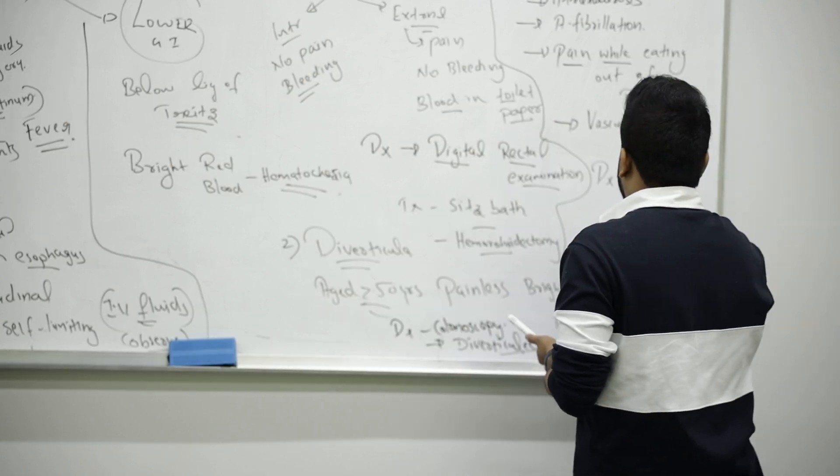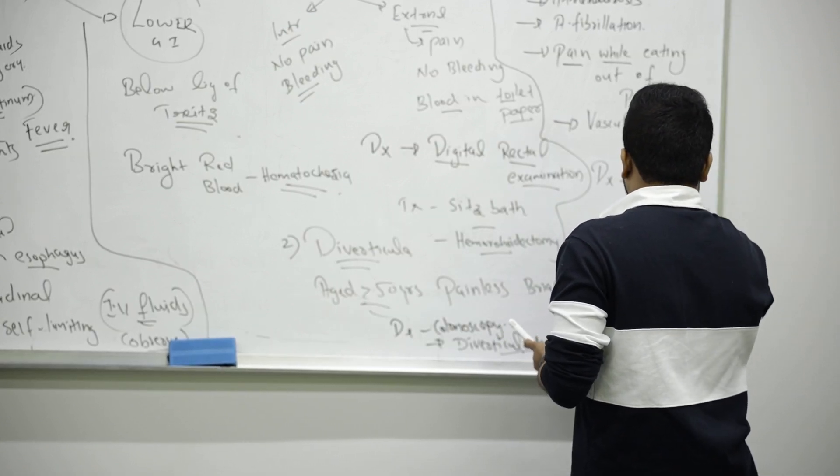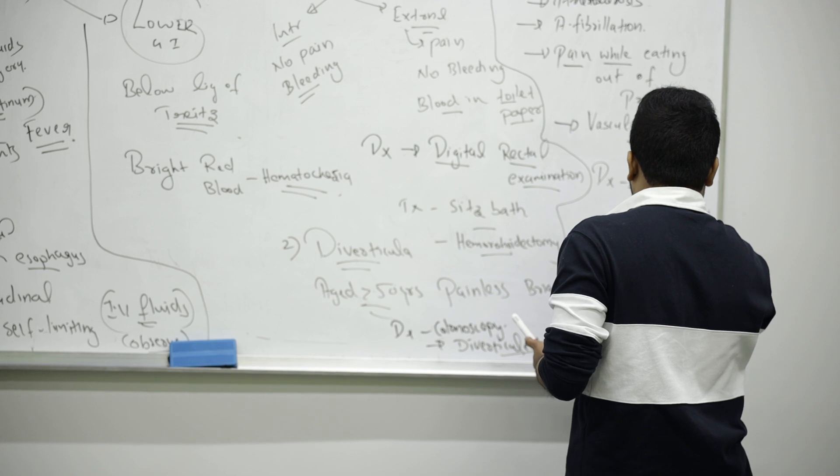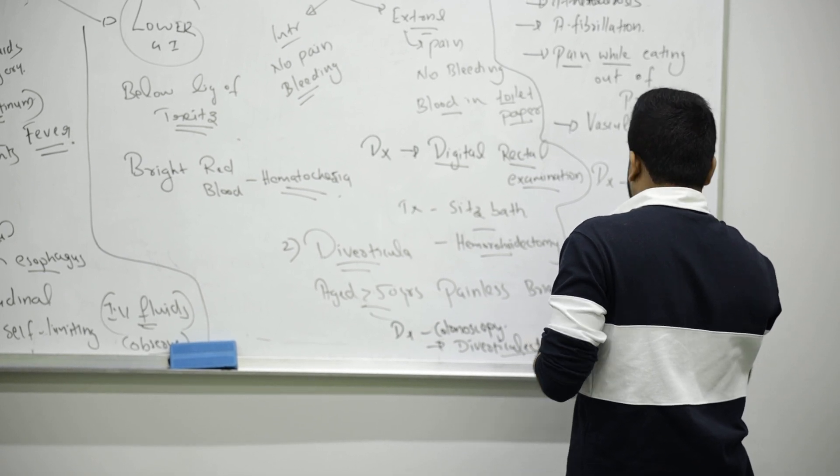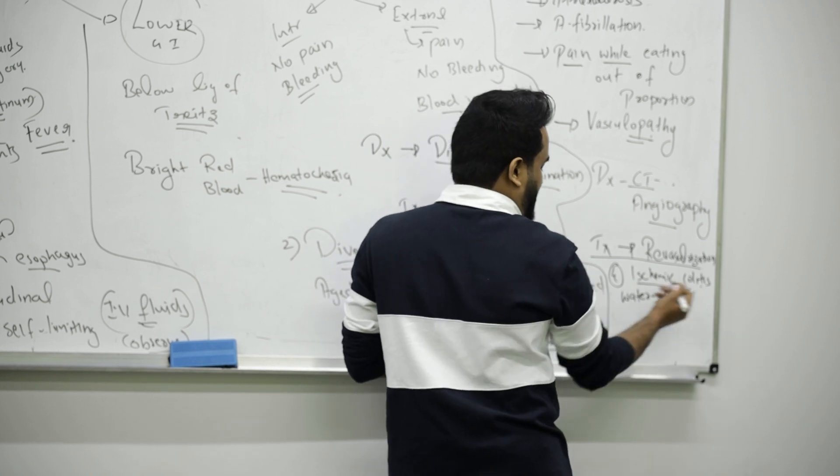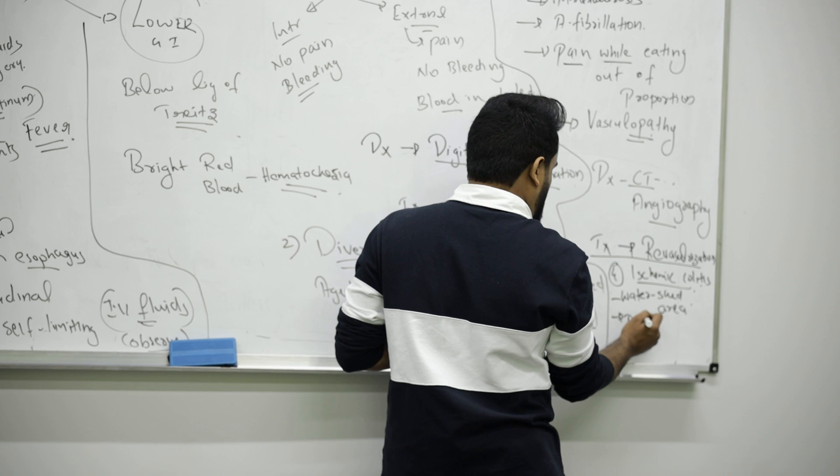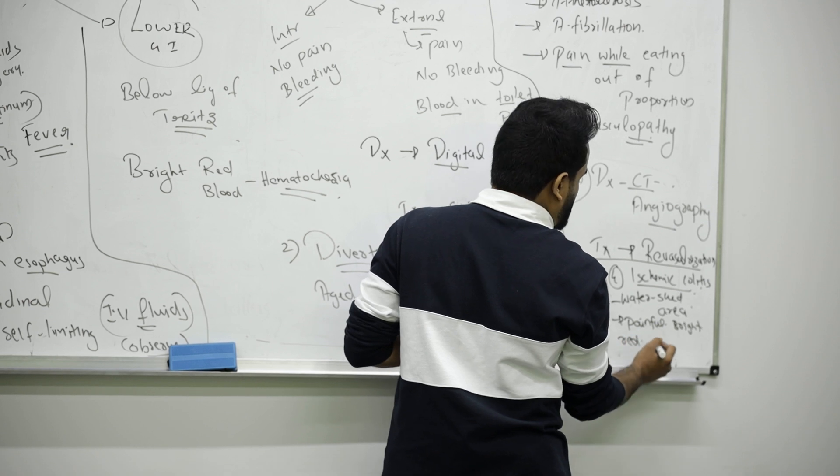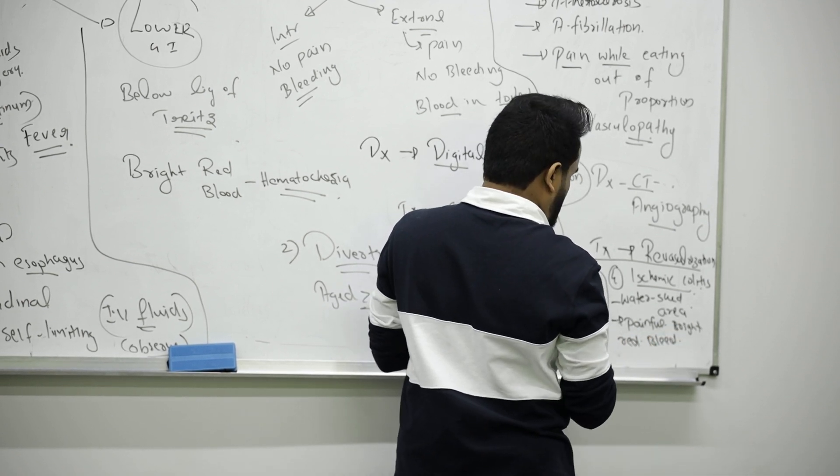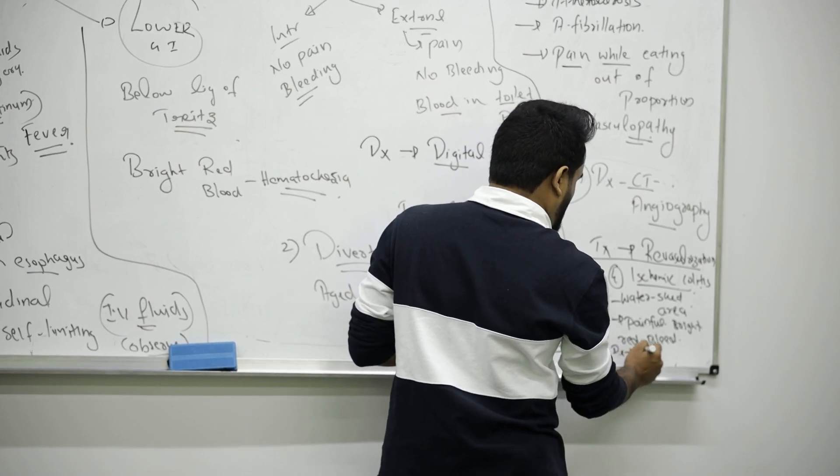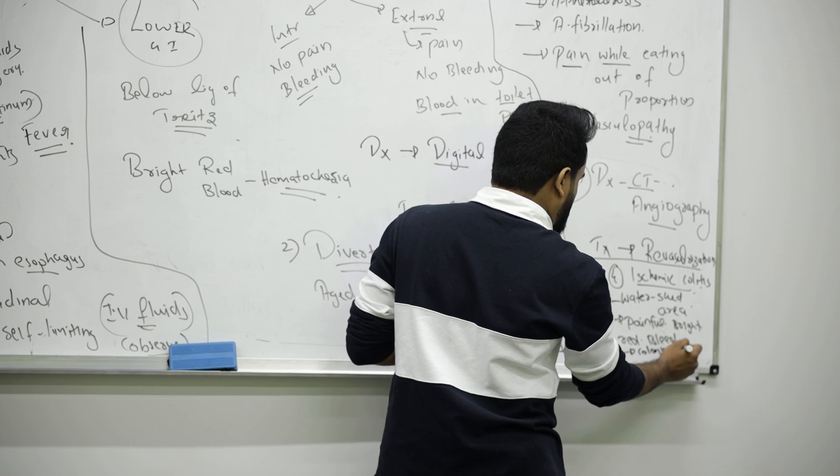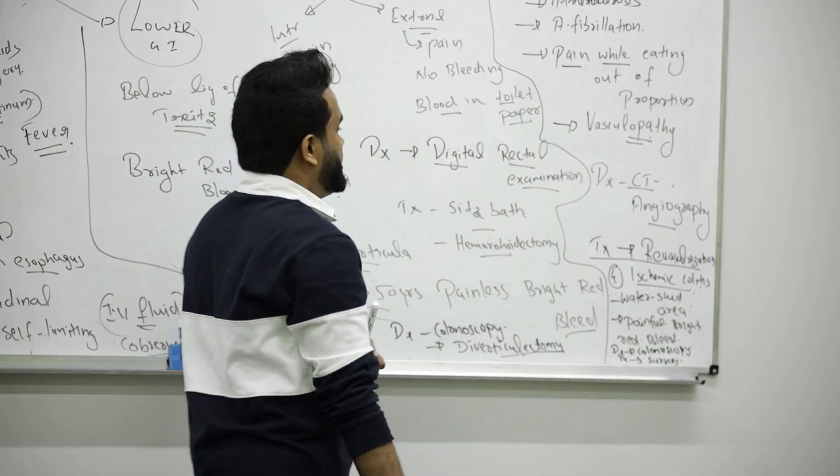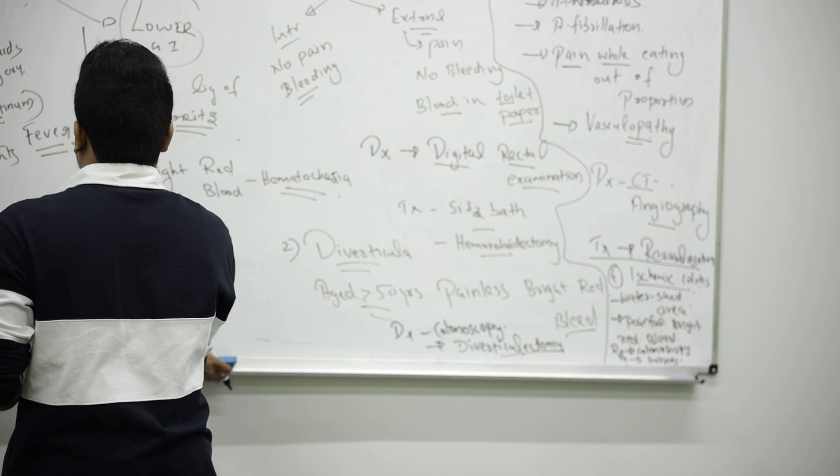Last one among lower GI bleed examples is ischemic colitis. It mainly affects the watershed area in the colon region. Here it will be painful bright red bleed. Here also, do colonoscopy for diagnosing. Treatment, again, is a surgical procedure.